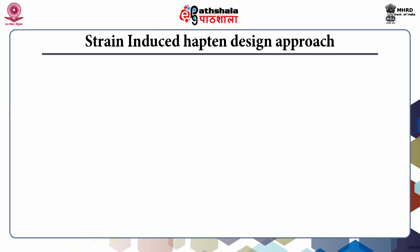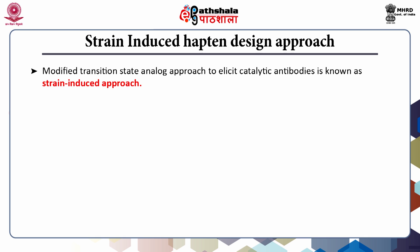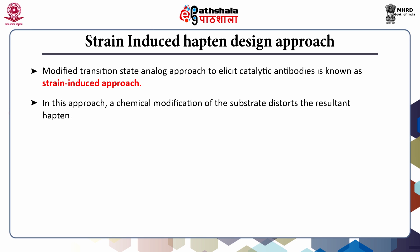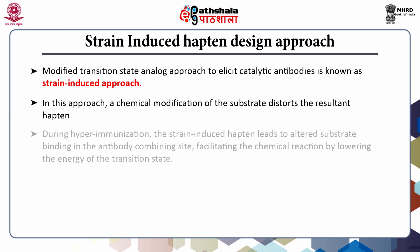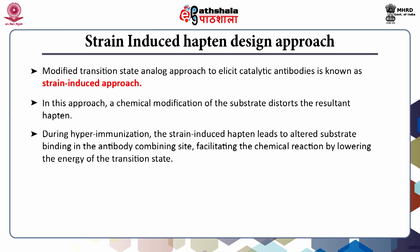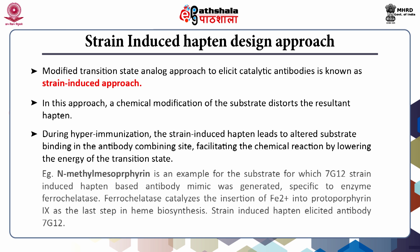The strain induced hapten design approach is a modified transition state analog approach to elicit catalytic antibodies. In this approach, a chemical modification of the substrate distorts the resultant hapten. During hyperimmunization, the strain induced hapten leads to altered substrate binding in the antibody combining site, facilitating the chemical reaction by lowering the energy of the transition state. N-methyl mesoporphyrin is an example of the substrate for which the 7G12 strain induced hapten-based antibody mimic was generated, specific to the enzyme ferrocheletase.